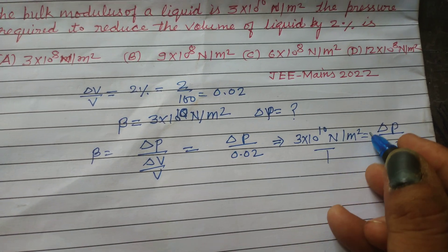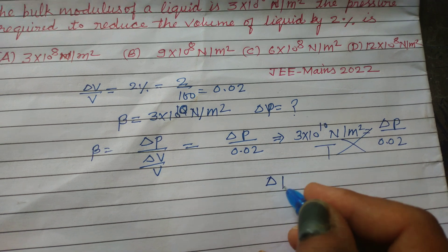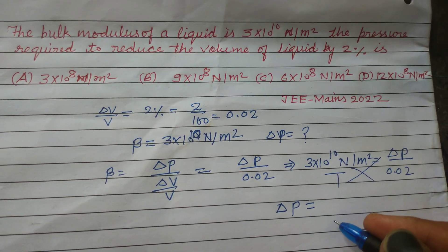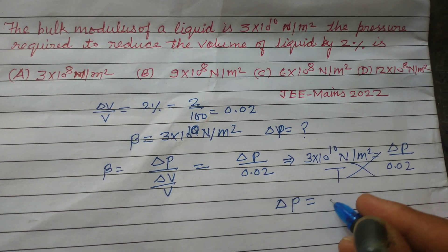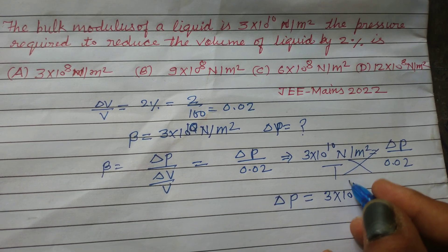So cross multiplying, we get the pressure required: 3 × 10^10 times 0.02.